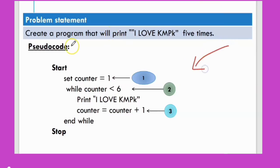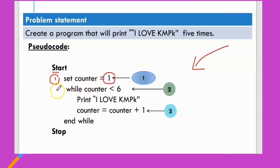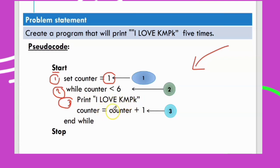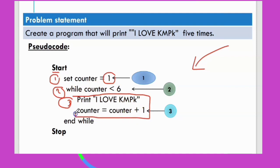For the pseudocode, write 'start'. First line: set counter equal to one — initialize the counter to one. Second line, the condition: while counter less than six. Third line: print the statement 'I love Campy Key'. For repeating the statement, we need the updating value: counter equal to counter plus one. This statement will be executed until the condition becomes false.